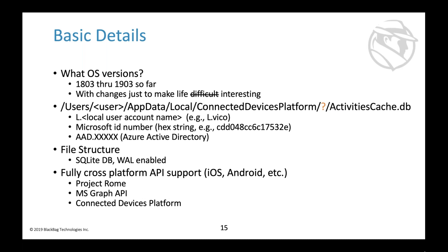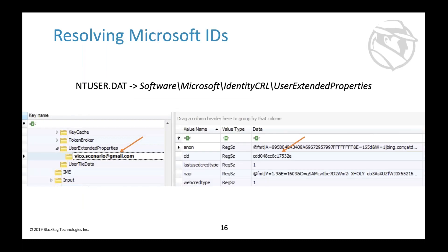Inside the ConnectedDevicesPlatform folder, the main things we care about are configuration files and a database called ActivityCache.db — that's where all the good stuff is. It's important to note that WAL (write-ahead log) is enabled and configured to be pretty big, so when exporting make sure you export the WAL too and that your tool is reading it.